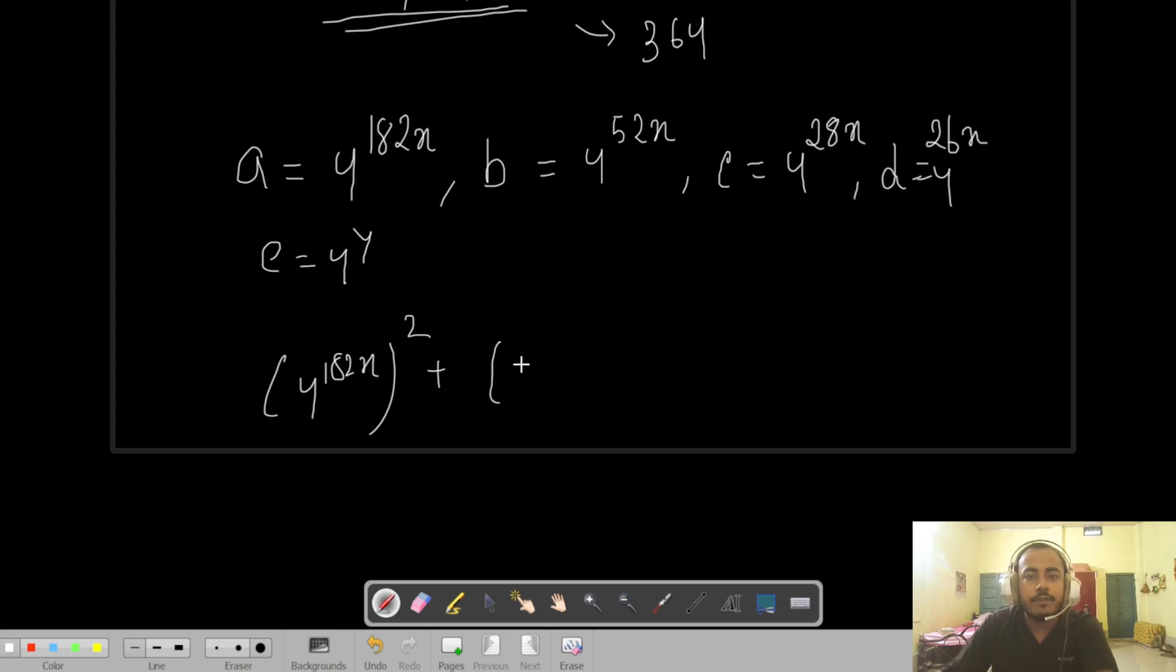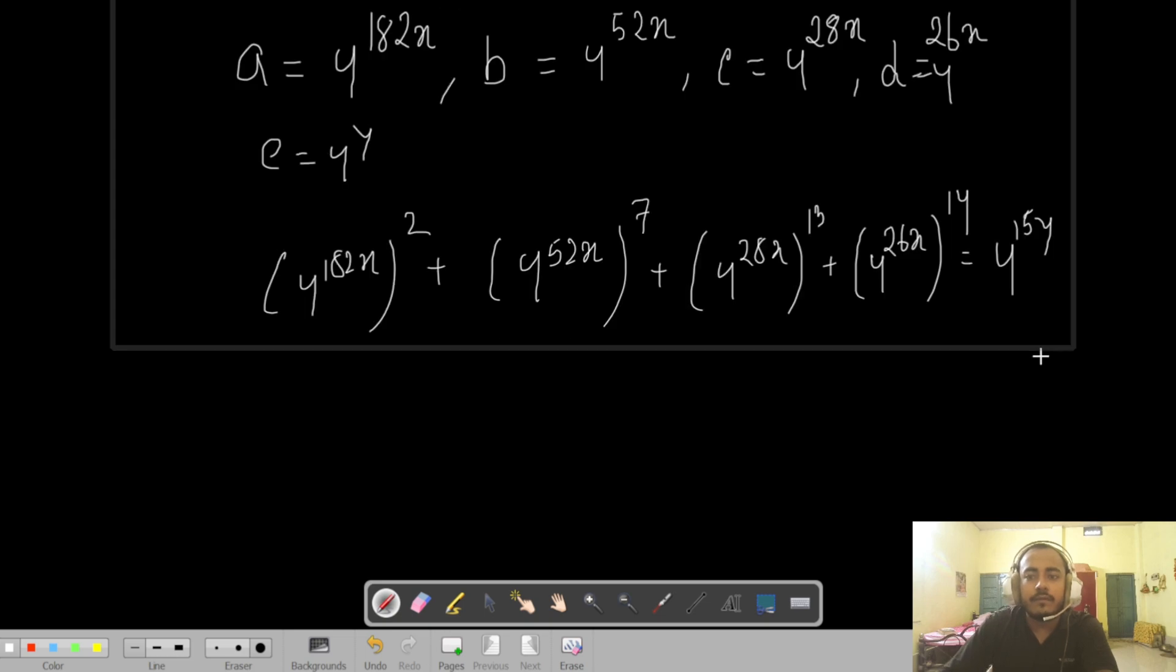So a squared plus b to the power 7, b to the power 7, 4 to the power 52x whole to the power 7 plus 4 to the power 28x whole to the power 13 plus 4 to the power 26x whole to the power 14 equals to 4 to the power 15y.